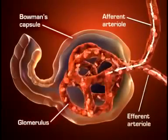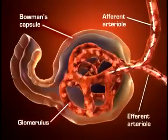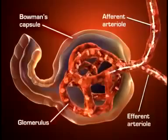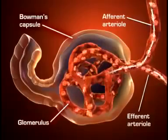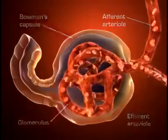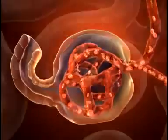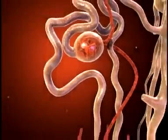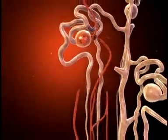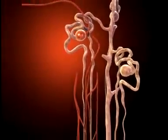The afferent and efferent arterioles regulate glomerular capillary pressure by selectively dilating or constricting. The kidney's venous blood, now filtered, flows from the glomerulus via the efferent arterioles.